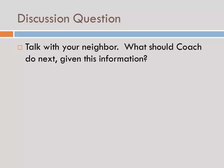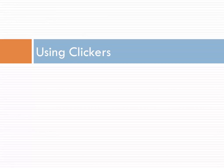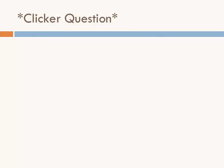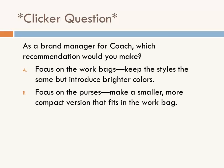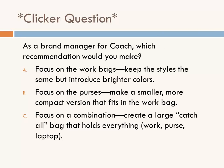Instead, you convert it: go through the marketing research material, then give students concrete clicker question options. Rather than just having them talk about it openly, give them three choices — 'Focus on work bags,' 'Focus on purses,' 'Focus on a combination' — and have them vote. Before showing results, have them do it individually first, thinking through the options. Then reveal the results.